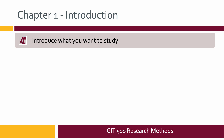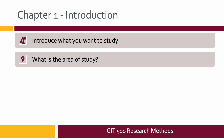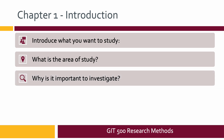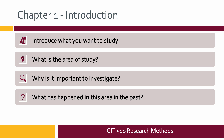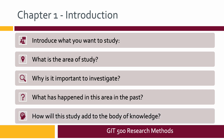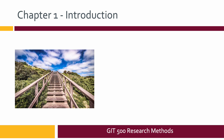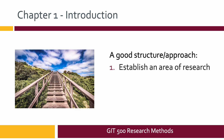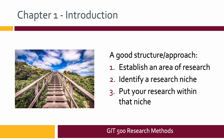In the introduction chapter you want to introduce what you want to study: the broad area of study, why it's important to investigate, what's happened in this area in the past, and how the study will add to the body of knowledge. A good approach is to establish a broad area of research, identify a research niche within that bigger area, and then place your research in that niche. Don't try to do anything too broad — it's much easier and more meaningful to pick a smaller piece of the area you want to study.